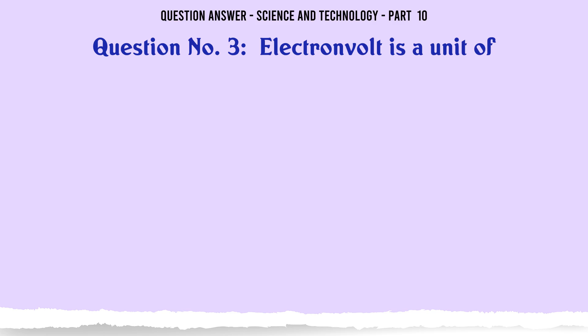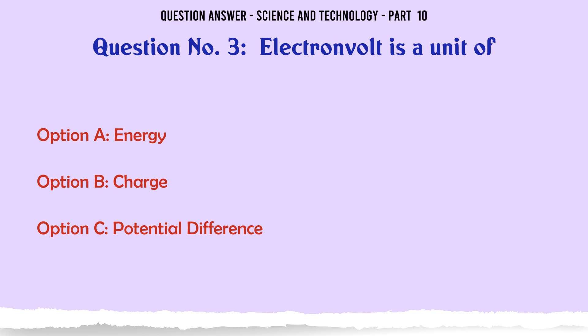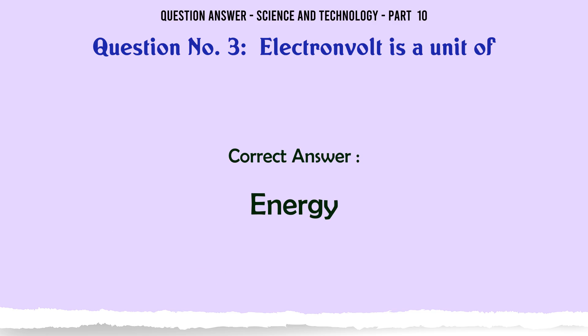Electron volt is a unit of. A. Energy. B. Charge. C. Potential difference. D. Magnetic force. The correct answer is Energy.